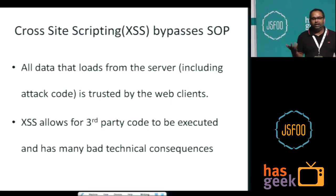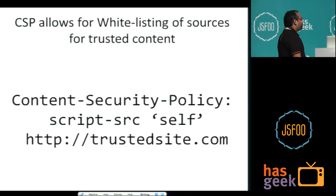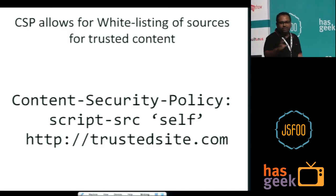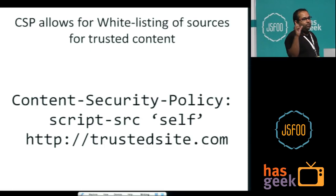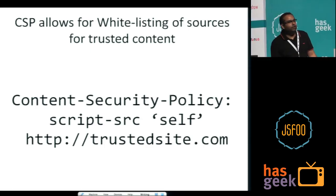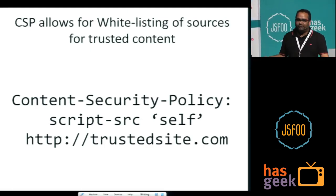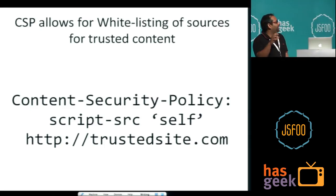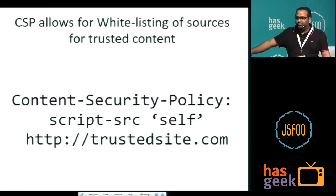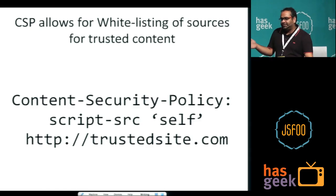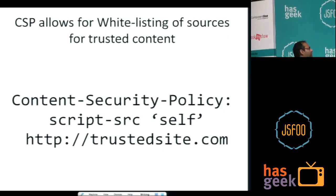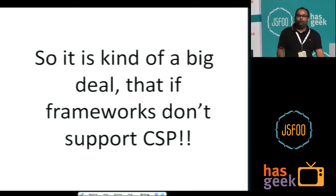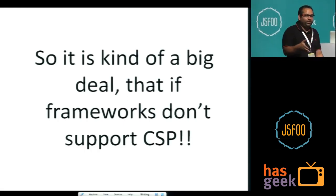So cross-site scripting allows for third-party code to be executed, and has many bad technical consequences, starting with stealing of data, session IDs and all that. So CSP is a policy to allow whitelisting of trusted content sources. First of all, it's a header — that's how you implement it. The server needs to send that header. Earlier there were multiple implementations: Firefox had a different header, Chrome had a different one. Everyone except IE supports this now. The content security policy header, where you say script source can be self and can be a trusted site. You can have multiple of these things, multiple different content types — images, fonts, other sources.